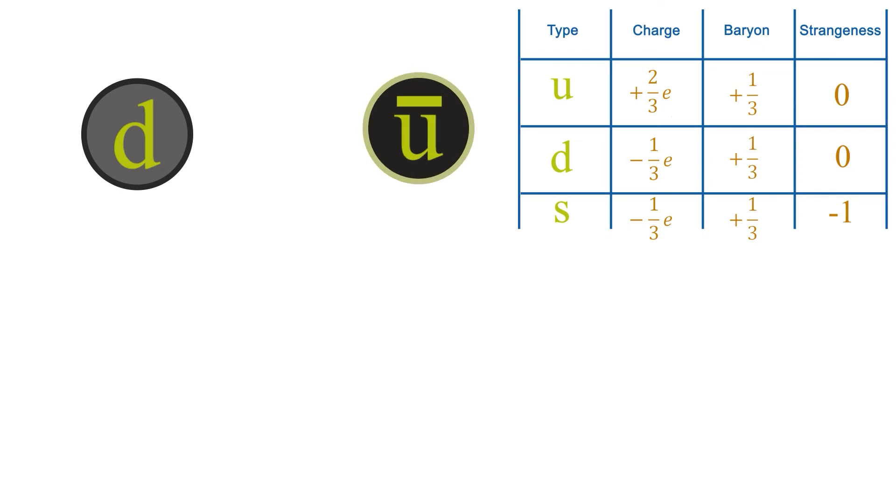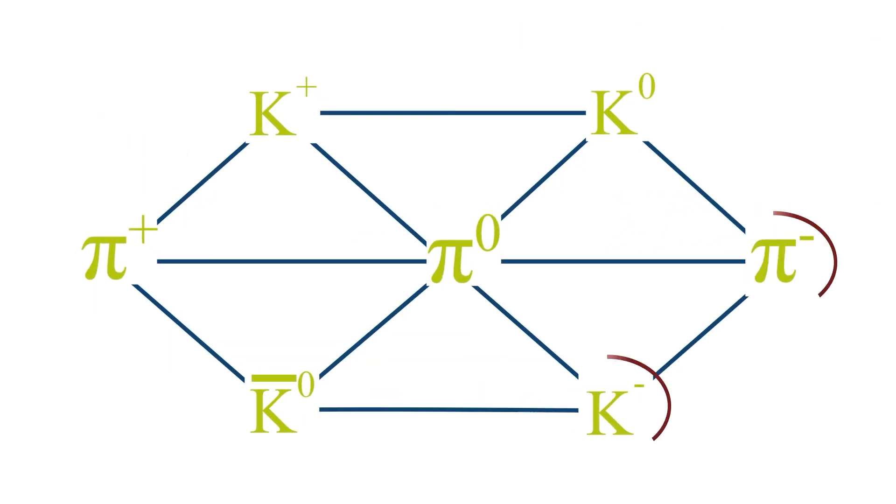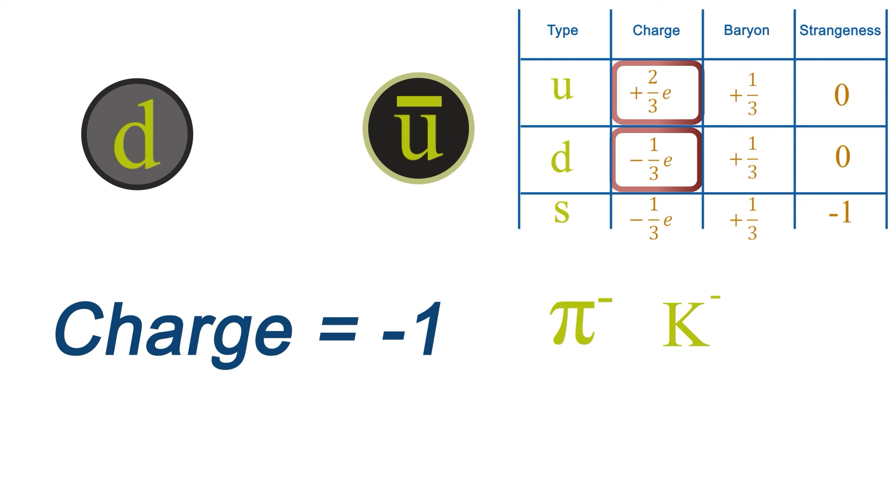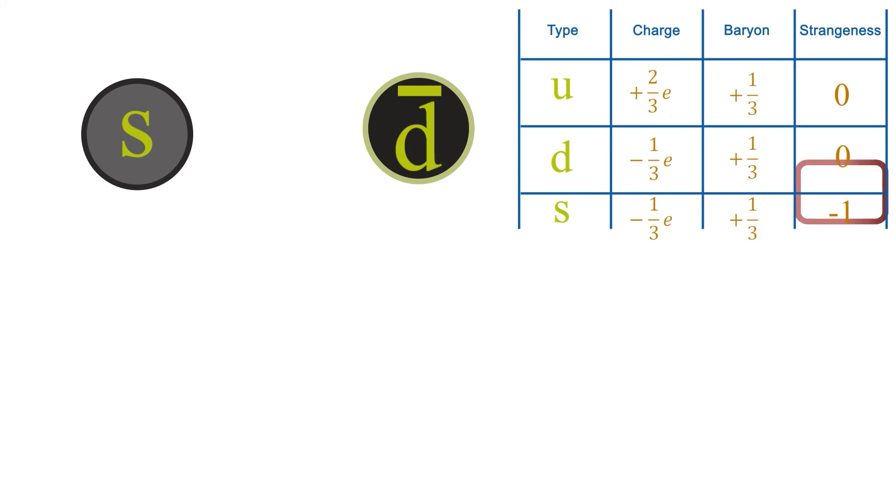What about the d anti-u? Well, for this, the charge on the d will be minus one third, and the charge on the anti-u will be minus two thirds, altogether making a charge of minus one, which means that our particle is either a K minus or a pi minus. Neither quark is strange, so the strangeness of our particle is zero, which means that this must be a pi minus.